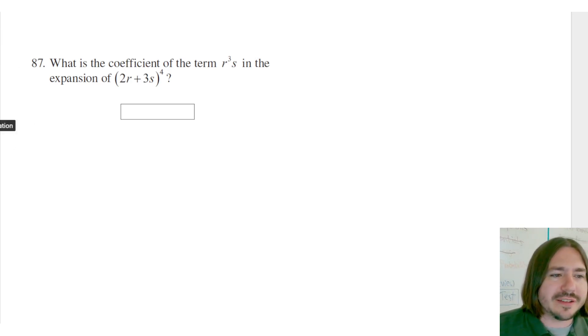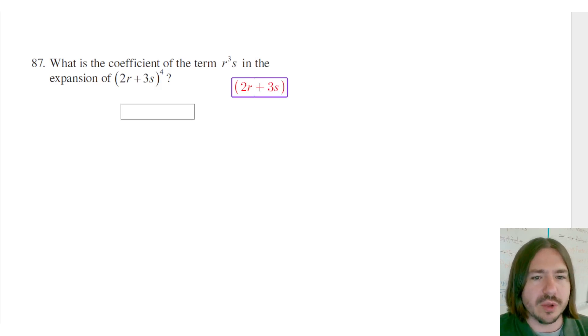Now, there is a shortcut for this problem using binomial expansion, but there's a lot of memorizing going on there. I'm going to work this problem from an algebra 1 standpoint, where I'm just going to multiply all these together and look for that r cubed s term.